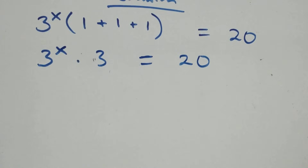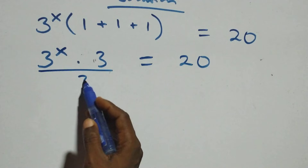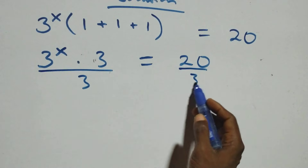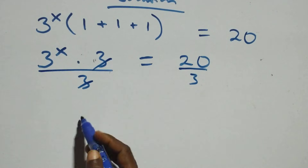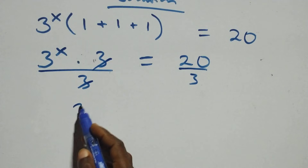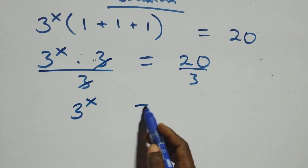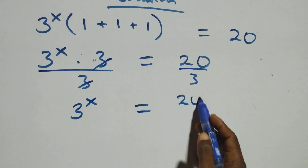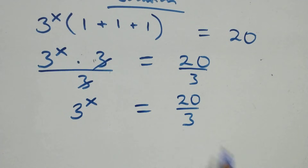The next step is to divide both sides by 3. We divide this side by 3 and also divide this side by 3. The 3s cancel each other and we have 3 raised to power x equals to 20 over 3.